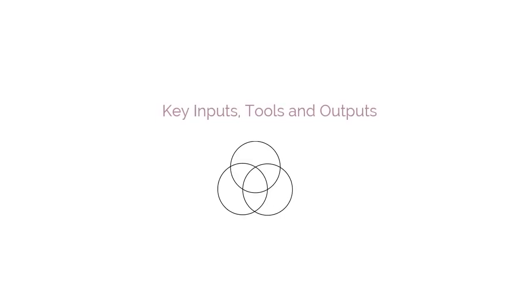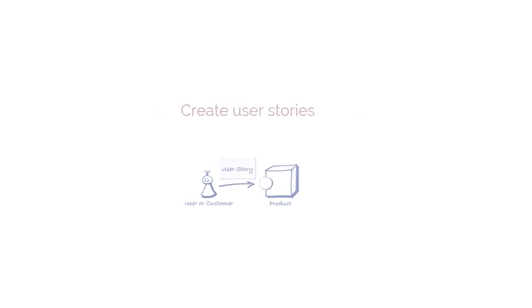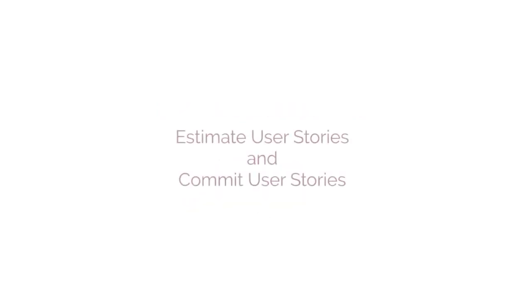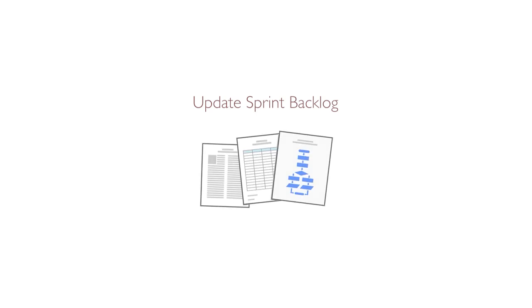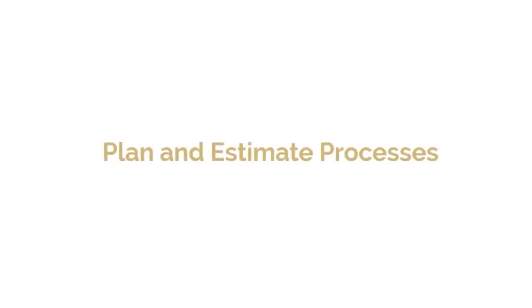The processes that are part of the Plan and Estimate phase are: Create User Stories, Estimate User Stories, Commit User Stories, Identify Tasks, Estimate Tasks, and Update Sprint Backlog. Let's begin with understanding briefly each of the processes that is part of the Plan and Estimate phase.